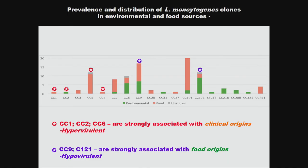This is what we found. Here you're looking at about 18 different clonal complexes — CC1 all the way through to CC451. Epidemiologically, we know certain clonal complexes are linked to infection in humans, and those are indicated with a red star. Any bars with a red star indicate particular types of Listeria monocytogenes associated with clinical origins — these strains we regard as hypervirulent, so they're likely to cause infection in a susceptible human host. The blue bars are more often associated with food origins — either the food matrix or the food production environment — and these are so-called hypovirulent strains that may not necessarily be as infective.